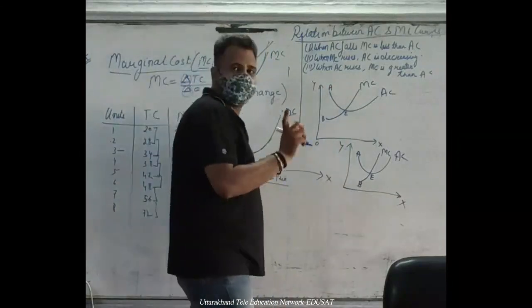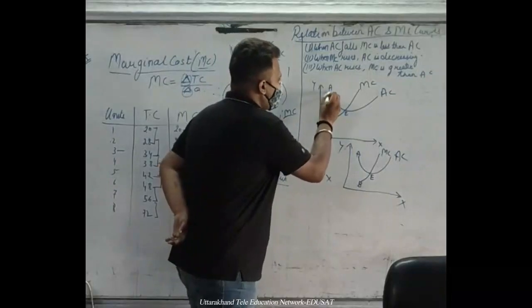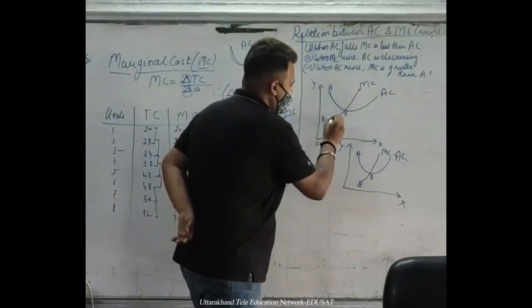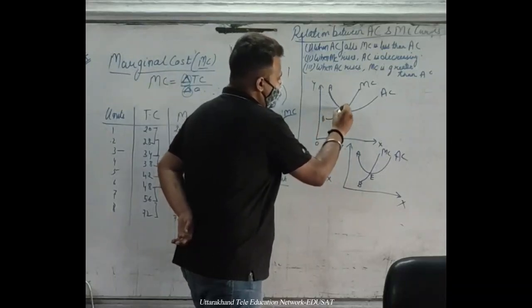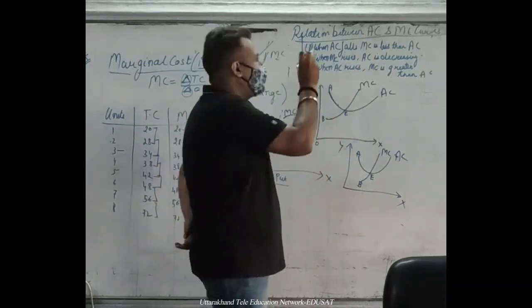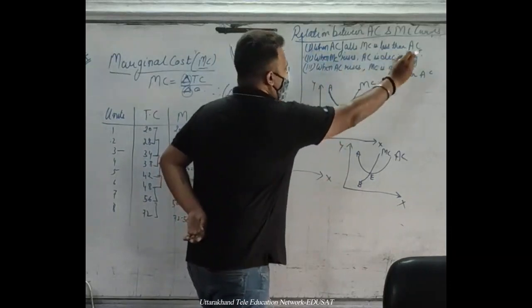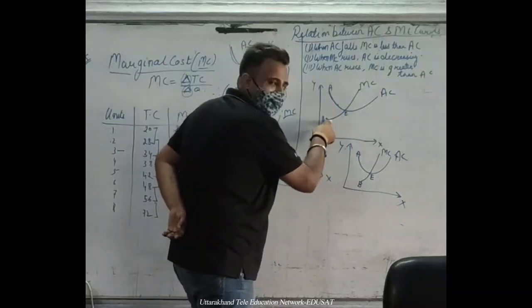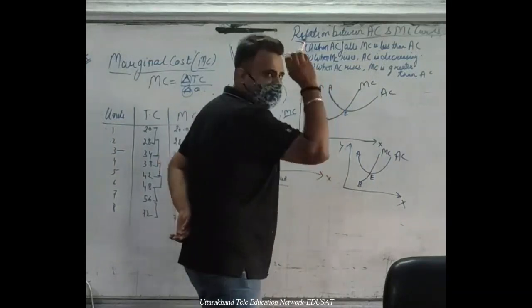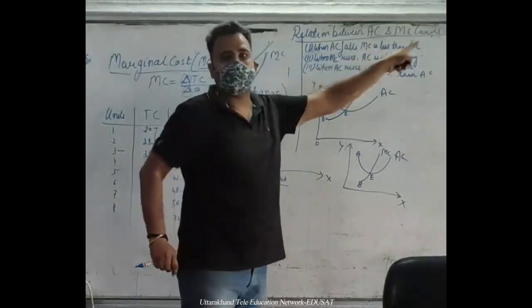What is the difference between the marginal cost and the average cost? When AC falls, MC is less than AC. This is MC and this is AC. So where it comes from — MC is less than AC. When MC is less than AC, AC is decreasing.